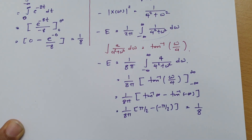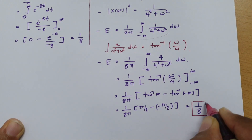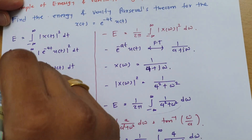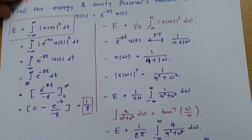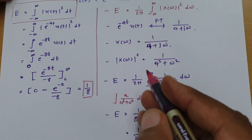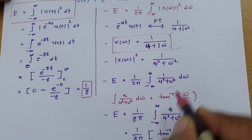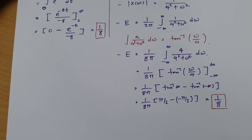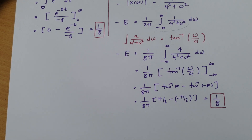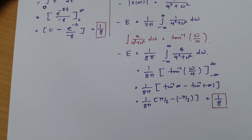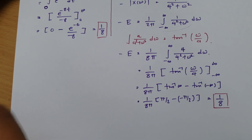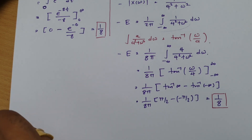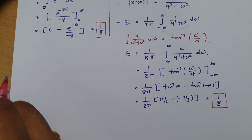Sometimes in an examination, the function is given in the time domain — in that case, use the basic formula. If the function is given in the frequency domain, use Parseval's theorem for energy calculation. Both formulas are correct and will give the same energy. You should choose whichever formula gives you an easier calculation — sometimes Parseval's theorem is easier, sometimes the time-domain approach is simpler.